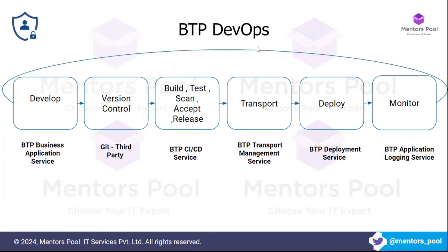You also need a monitoring tool to check the health of your application, which is what the BTP application logging service does. When enhancements are needed, the process starts again — and developers just need to trigger it once their development is done, and everything else happens automatically. This is what we call the automated software development lifecycle, and SAP now supports this at a level that wasn't possible before.